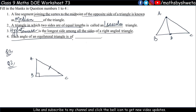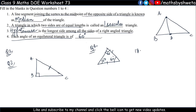Question number 4: Each angle of an equilateral triangle is 60 degrees. Why? When the equilateral triangle has all sides equal, each angle is also equal. Because the sum of angles of a triangle is 180 degrees, dividing 180 by 3 gives 60 degrees each.